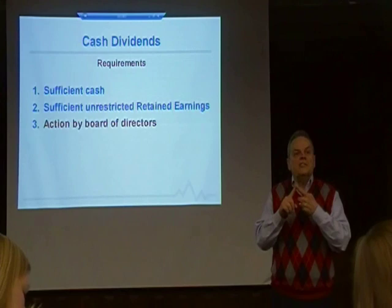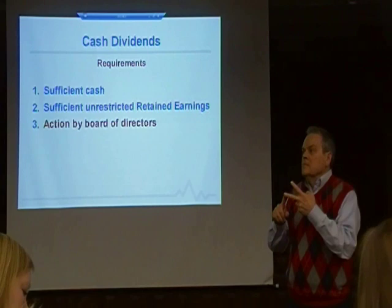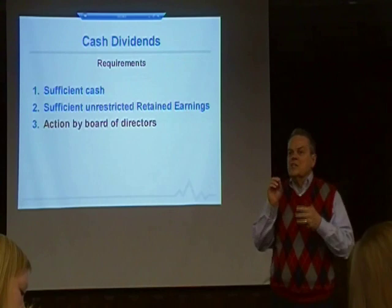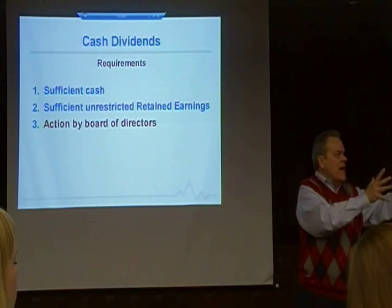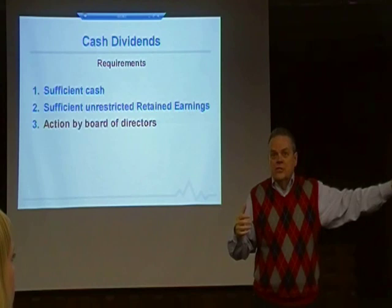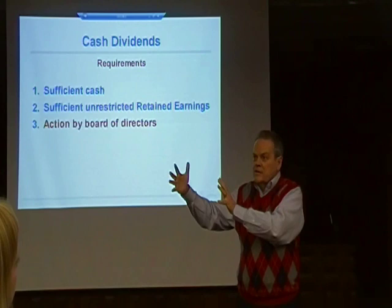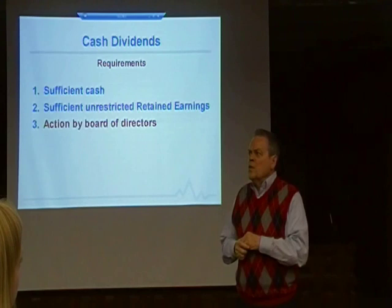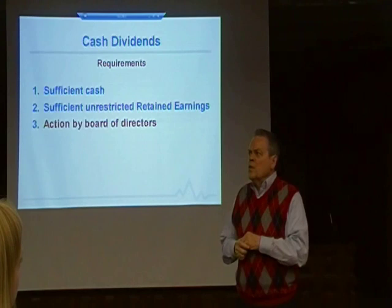To declare a cash dividend it takes: sufficient cash, sufficient unrestricted retained earnings, and action by the board of directors. That's the distinction — a proprietor decides and withdraws; a corporation's board decides and distributes proportionally to all owners. Own a lot, you get a lot; own a little, you get a little — but everybody who owns something gets something. The decision rests with the corporation.